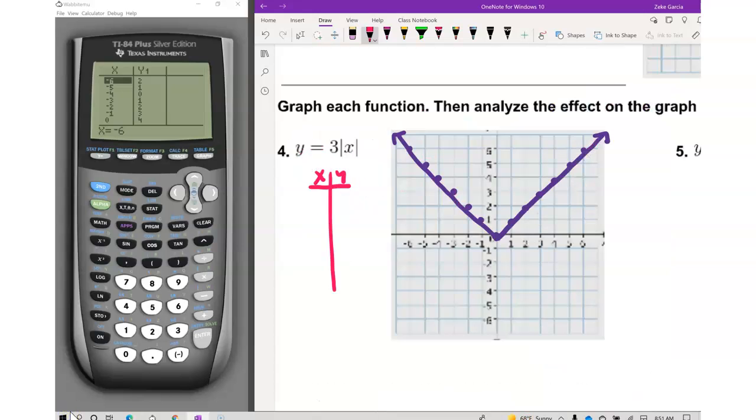I'm doing number 4. We have Y equals 3 times the absolute value of X. I'm going to go to Y equals, 3 math number, absolute value of X. And then I'm going to go ahead and look at my table.